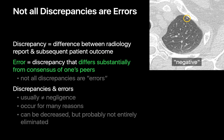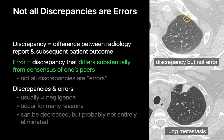Take this calcified 1 mm left upper lobe lung nodule that was reported by a radiologist as a granuloma, but turned out to be an osteosarcoma metastasis. Although the call of a granuloma was incorrect, it's probably what many radiologists would have done in this situation, and therefore a discrepancy rather than an error.